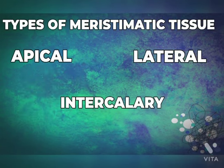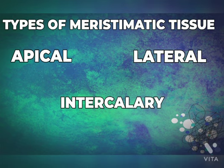Now, types of meristematic tissue. There are three types: apical, lateral, and intercalary. Apical meristematic tissue is found at the apex of stems and roots. Intercalary meristematic tissue is usually found at the base of internodes. Lateral meristematic tissue occurs laterally in the axis, parallel to the sides of the stems and roots.